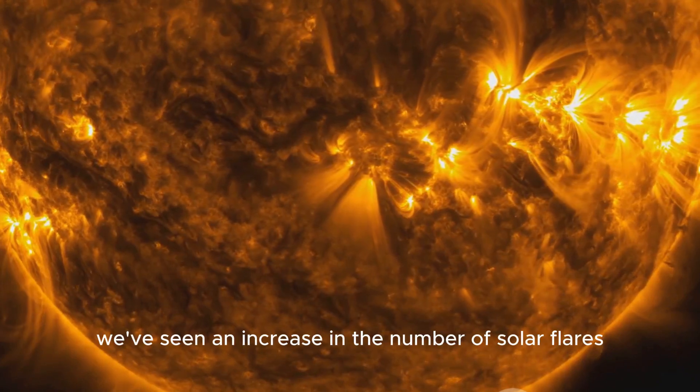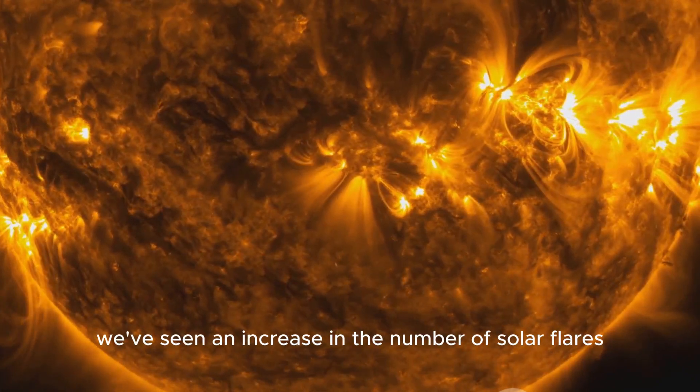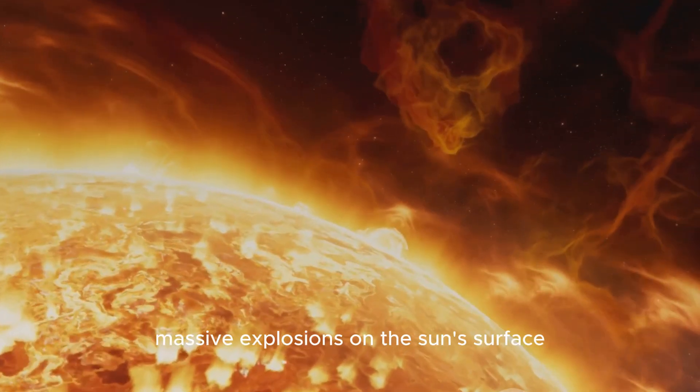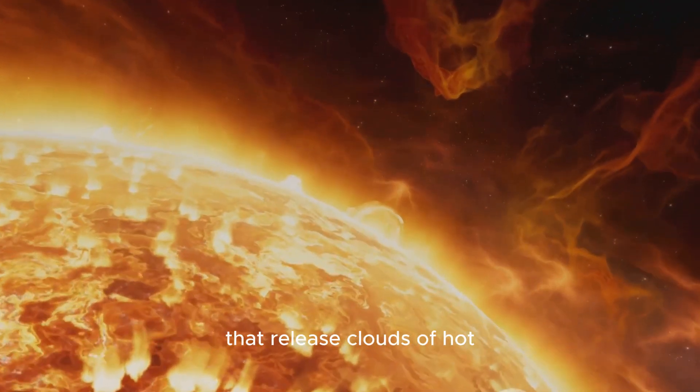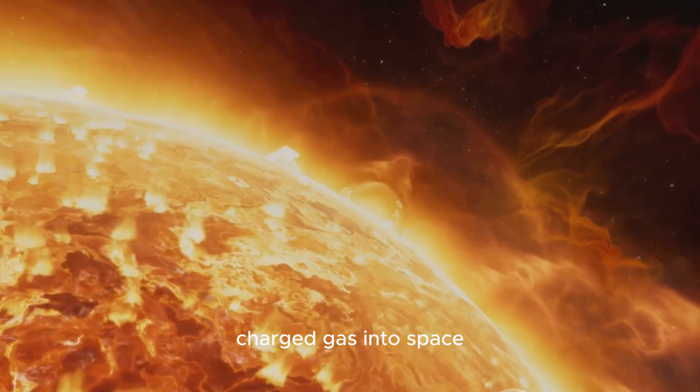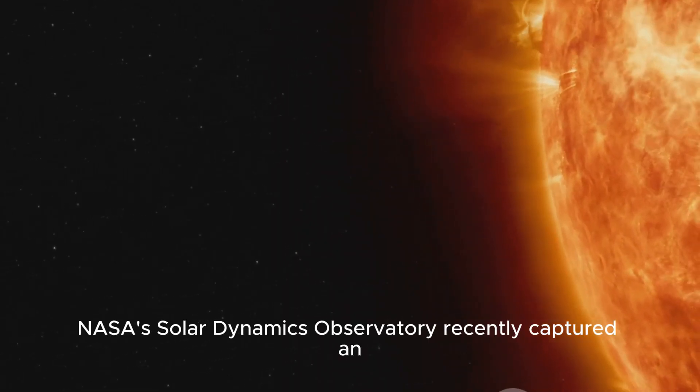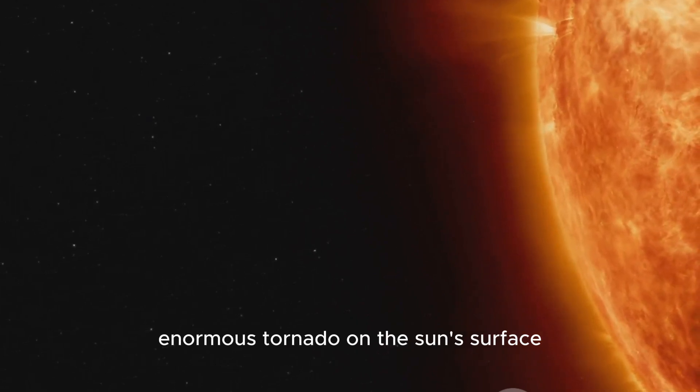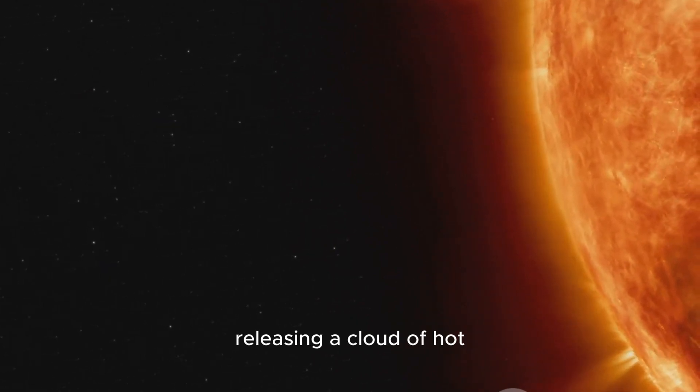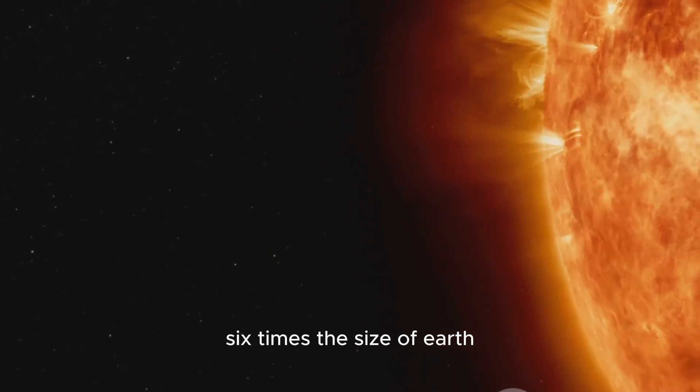For starters, we've seen an increase in the number of solar flares and coronal mass ejections. These are essentially massive explosions on the sun's surface that release clouds of hot charged gas into space. NASA's Solar Dynamics Observatory recently captured an enormous tornado on the sun's surface, releasing a cloud of hot, charged gas six times the size of Earth.